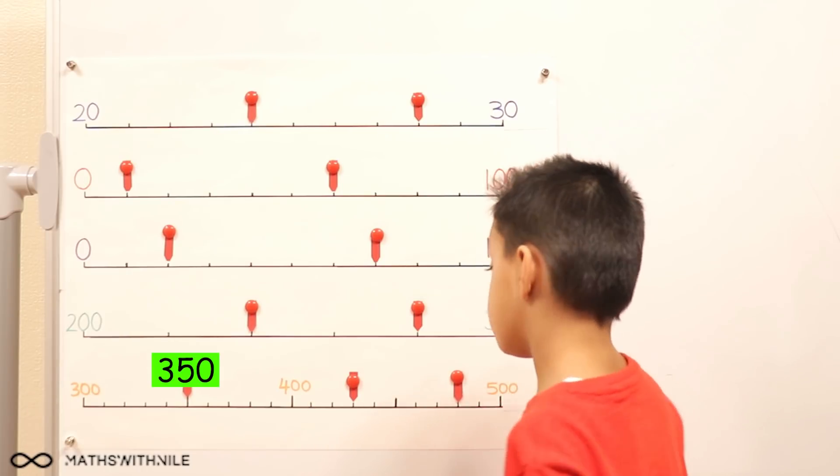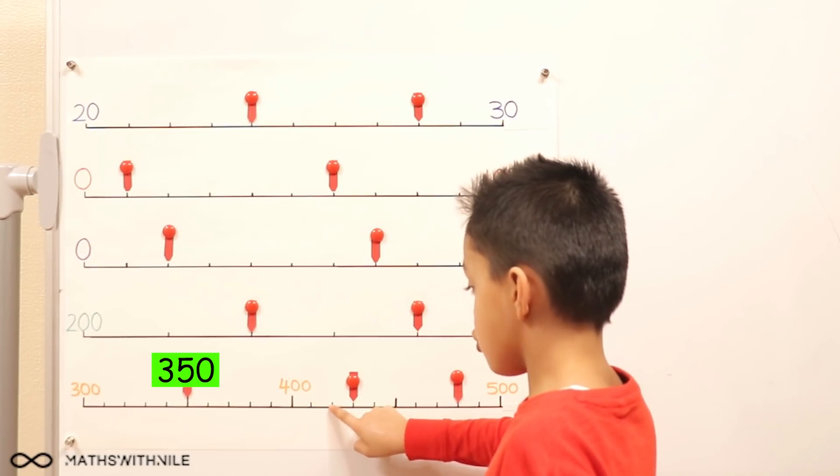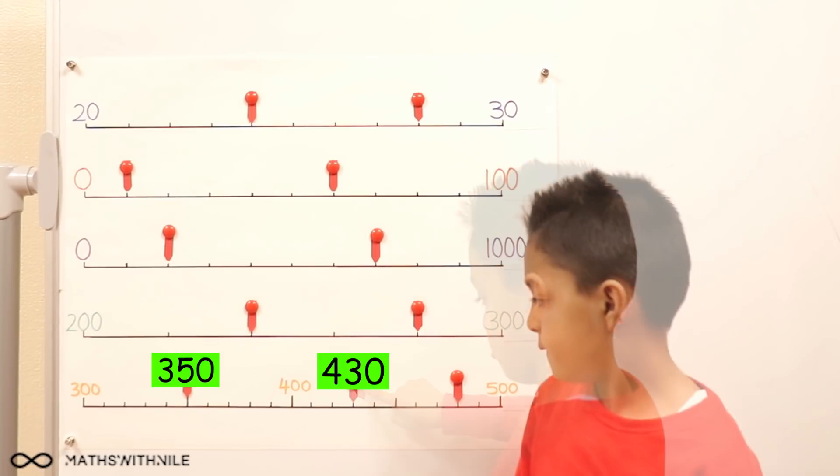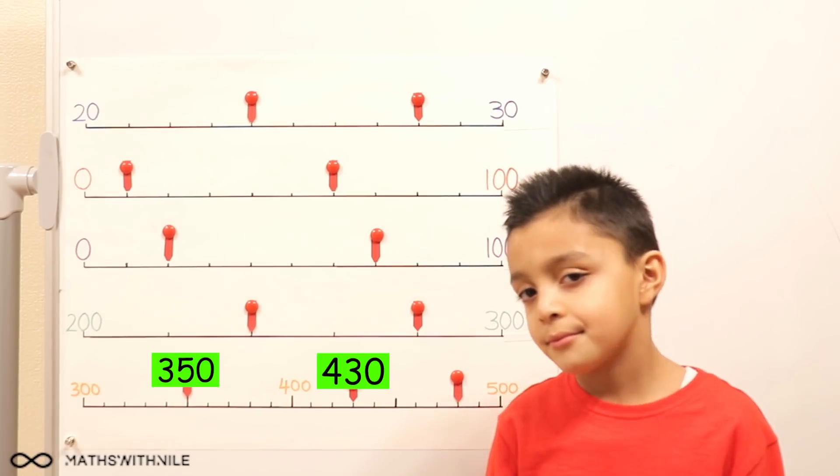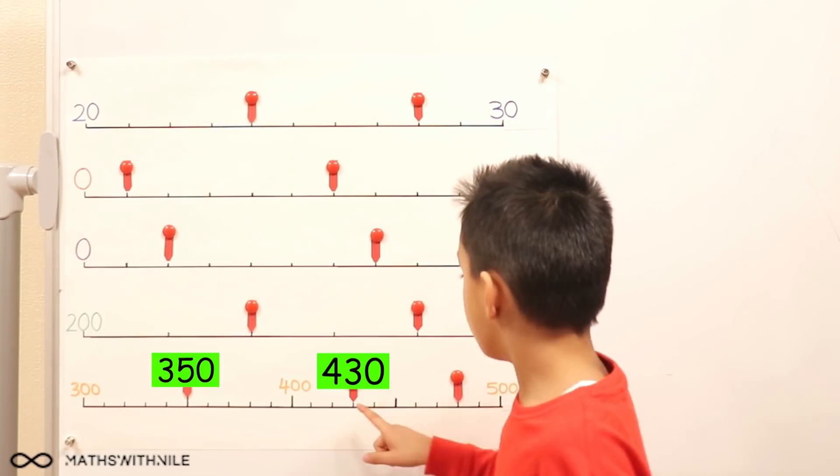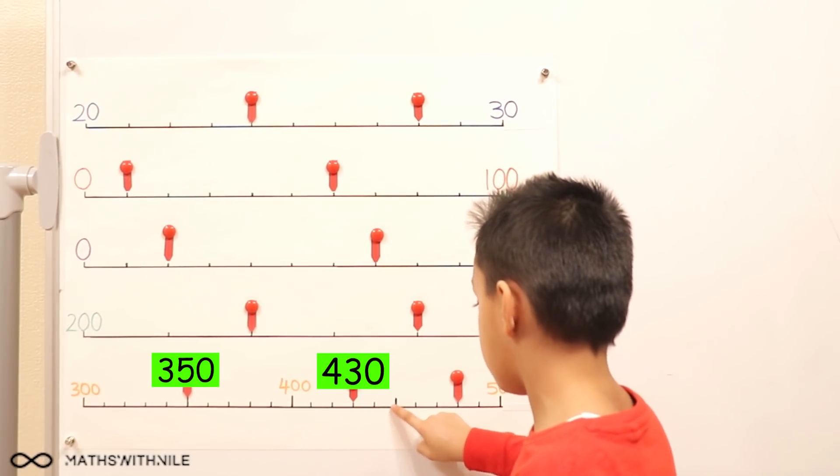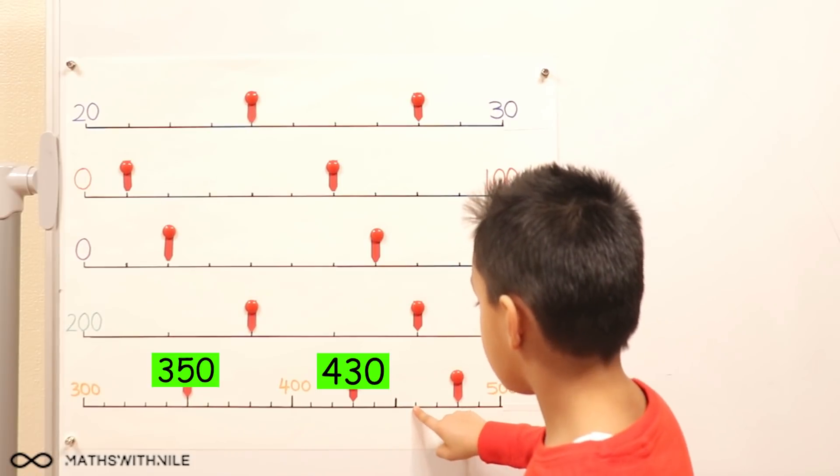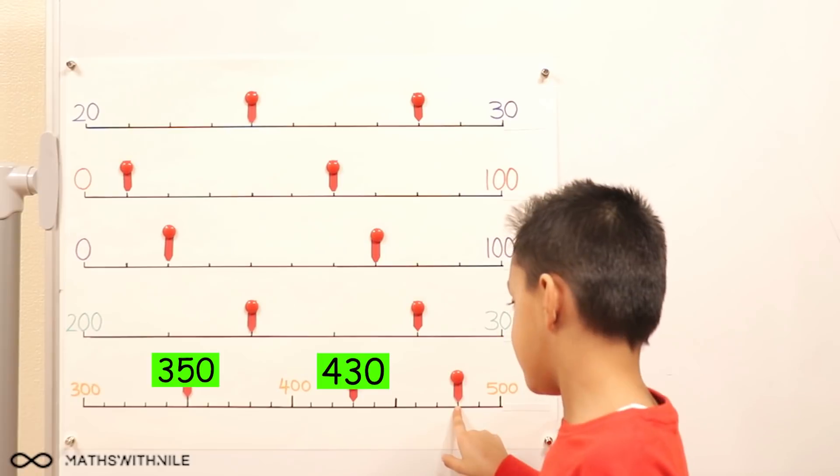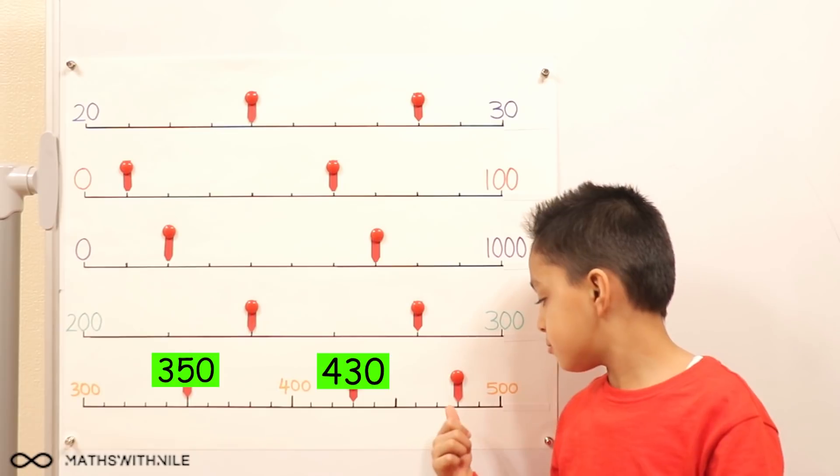Continue until you reach the next arrow. 410, 420, 430. So that second arrow is 430. Continue. 430, 440, 450, 460, 470, 480, 490, 500. So what's the last one? 480.